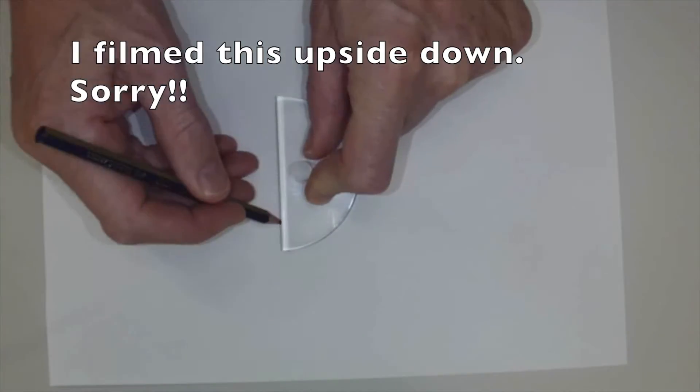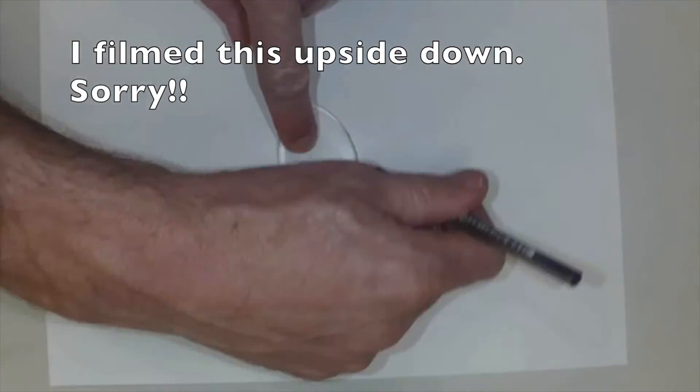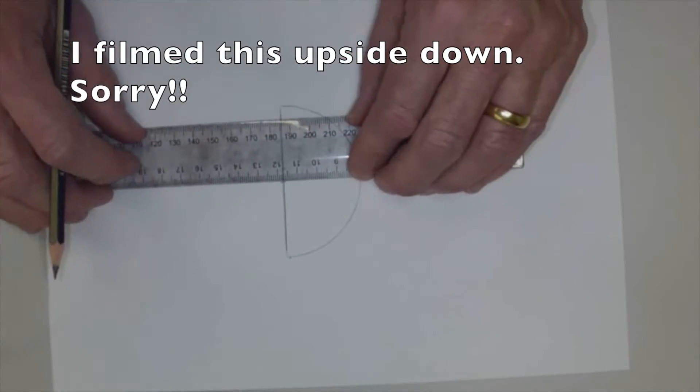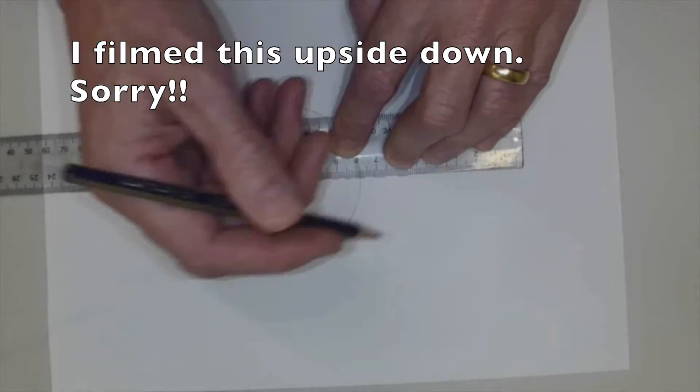The next thing that we must do is place our semicircular prism on the paper and trace around it. We have to find the exact middle of the flat surface and draw in our normal line.